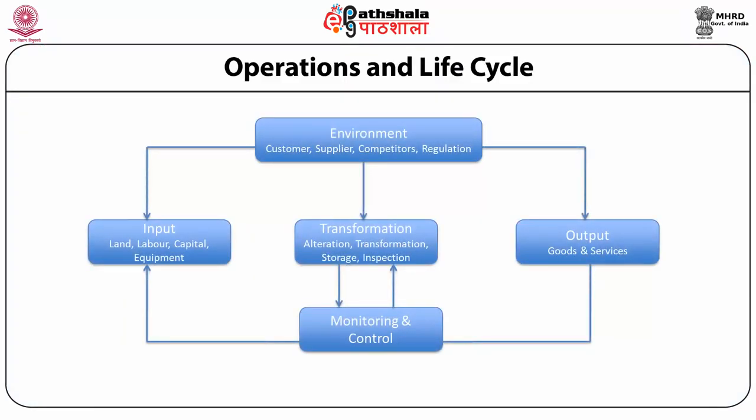In the operations and life cycle model, input, transformation, and output are the three core entities, with monitoring and control maintained through a feedback mechanism. The environment also intervenes through customer inputs, supplier inputs, competitor inputs, and regulatory inputs.